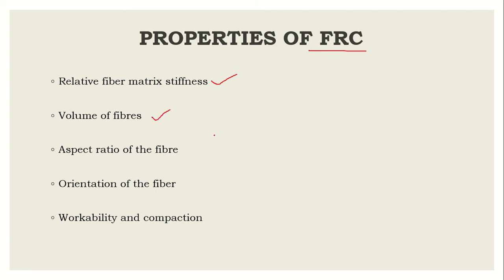The second property is volume of fibers. The volume should be sufficient to make the concrete strong and stiff — with increasing volume, tensile strength and stiffness increase. However, a higher percentage of fiber can sometimes cause segregation and harshness, making the concrete unworkable. You need to select an optimum quantity. Generally, fibers are added by percentage of weight of the binder.